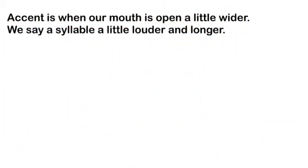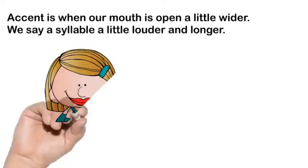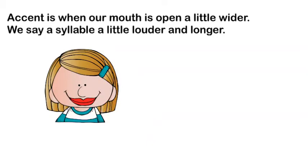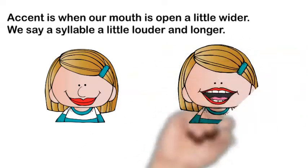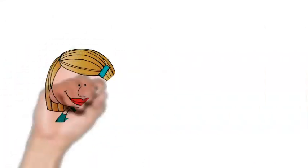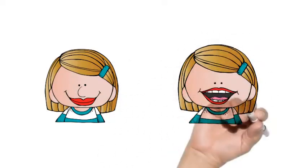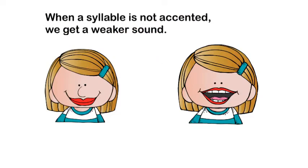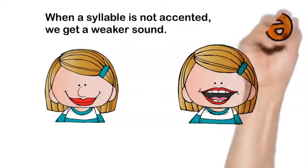You tend to get a weaker sound like 'uh' or 'ih,' and we mark it with an upside down e — that's the schwa symbol. We know that in an open accented syllable, the vowel says its long sound. Like in the word 'bacon' — 'bay' is the accented syllable. The 'a' is accented and so it says its long sound.